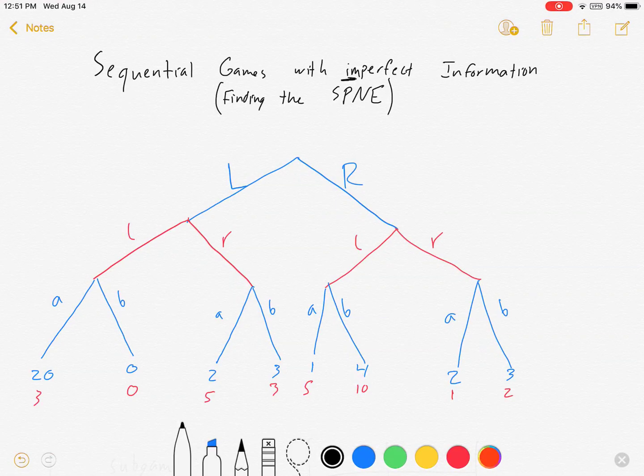I changed a couple of the payoffs here to give us clearer answers, but more importantly, I'm going to change this game by making it so that when blue player plays the second time, so when we're choosing A or B, the blue player is unable to observe what the red player has done.